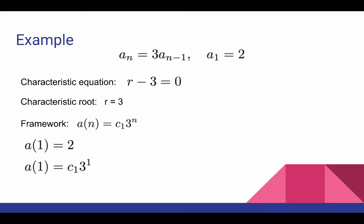We do that by noticing that when n equals one, a(1) is equal to two, because that's what the initial condition is. But at the same time, the framework says that a(1) is c1 times three to the first, by plugging in n equals one into the formula for the framework.